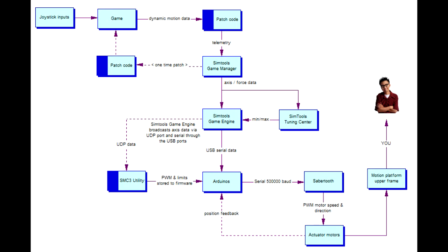Once the Arduino has commanded the actuator to move to a set position, it looks for feedback from the position potentiometers to determine whether it has reached the desired position or not. Other interface boards such as SCN, JRK and Symax work in a similar way.